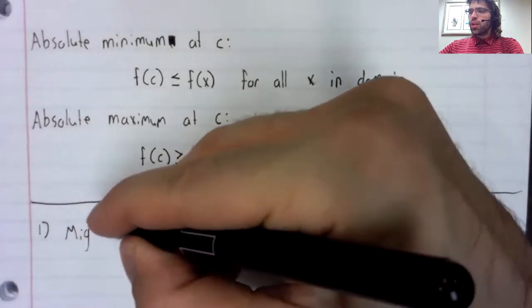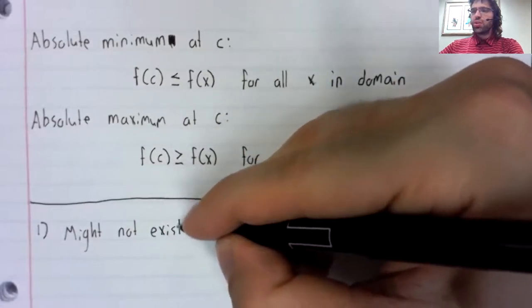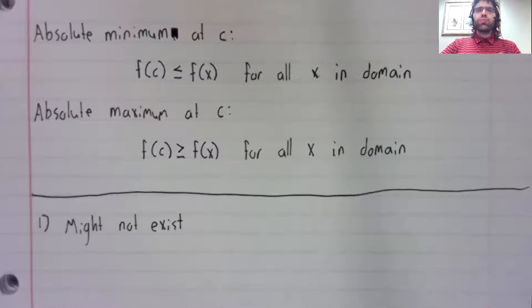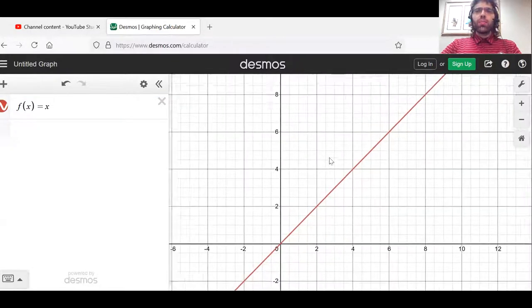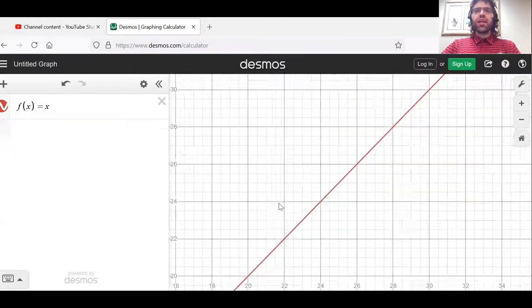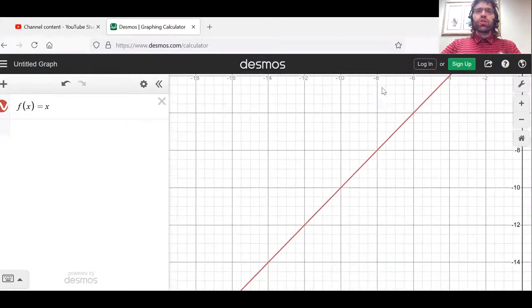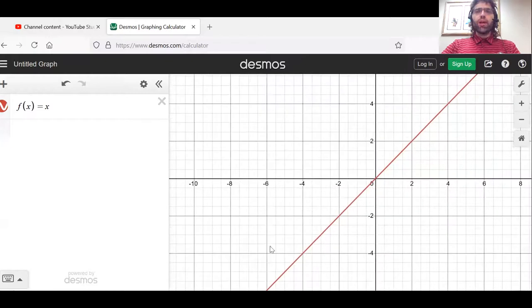First, they might not exist. There are plenty of functions that do not have an absolute minimum or an absolute maximum. The linear function f of x equals x doesn't have a maximum. The further to the right you go, the bigger it gets. It doesn't have a maximum value. And similarly, the further to the left you go, the smaller it gets. It doesn't have a minimum value.